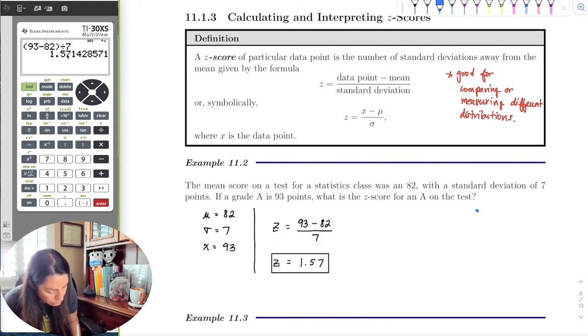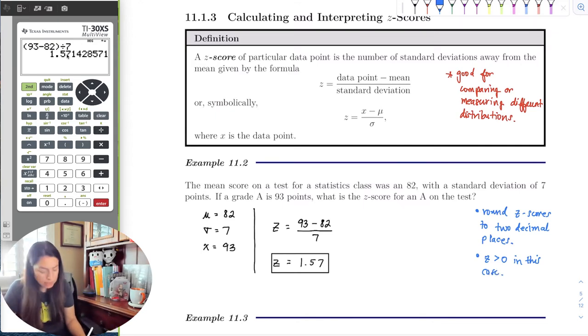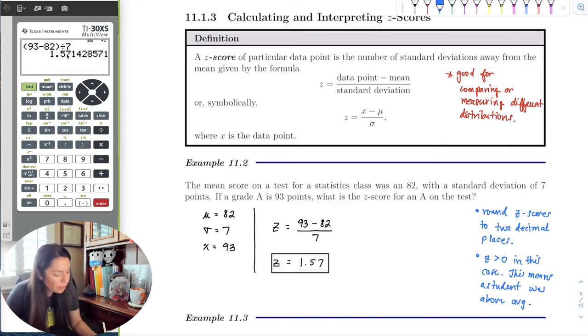And that's all there is to it. Let me make a note over here. Round z-scores to two decimal places. That's on purpose, that is intentional, and we'll see why a little later. Notice that here the z-score is positive in this case. When the z-score is positive, this means a student was above average.